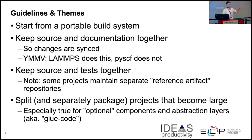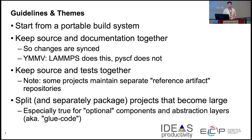During your pull request and review procedures, double check that your documentation and tests have been updated to reflect what's happened in the source code. Some projects maintain separate reference artifact repositories — if you've got large gigabyte files used to reference results of a run, it's probably good to keep those in a separate repository, and your tests would then download the reference artifact, run, and check. Split and separately package projects that become large. Once you're good at packaging and able to import a program from elsewhere, you can make your code more modular and separate development concerns along packaging lines.